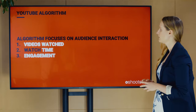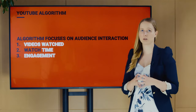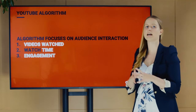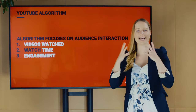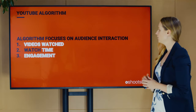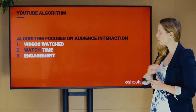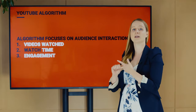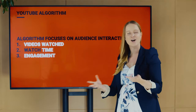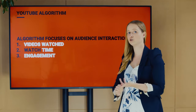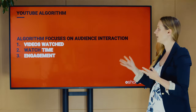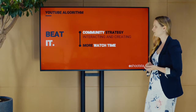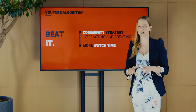The YouTube algorithm looks at how much time people spend engaging with your video, which videos people do and don't watch, how much watch time a video accumulates, how much time people spend on YouTube in general, and whether they engage with your content at all. How do you beat it? First, have a community strategy — interact. Don't just upload a video and let it sit there. It's a social platform, so give some love and get some love back.